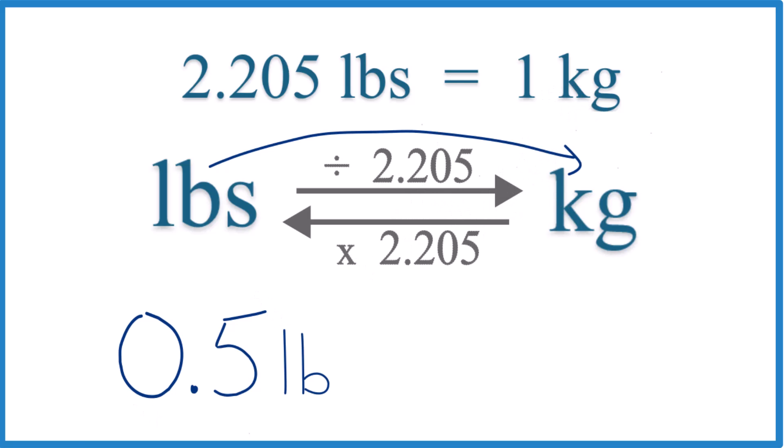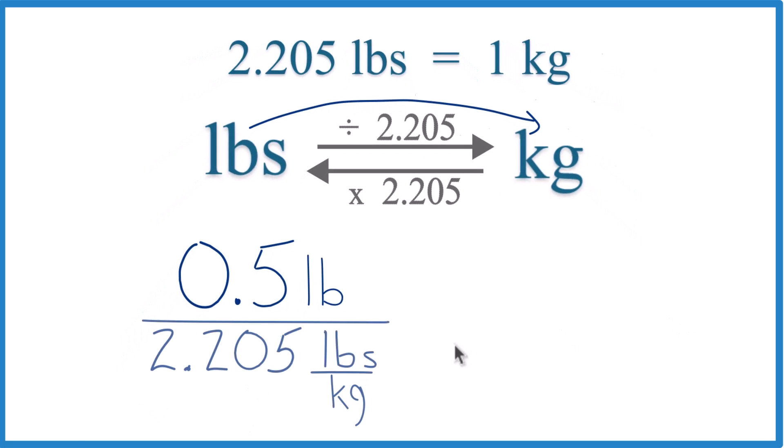So we're going to divide by the 2.205 number here, like this, and now you can see that we have 2.205 pounds per kilogram. That came from our conversion factor.